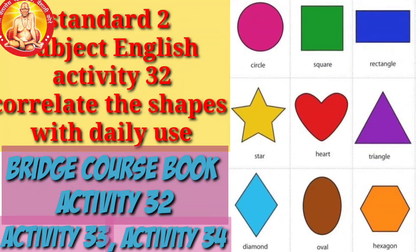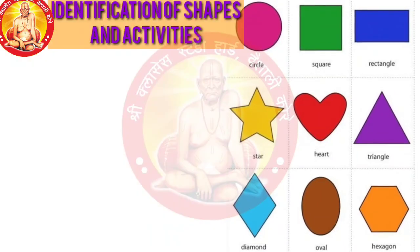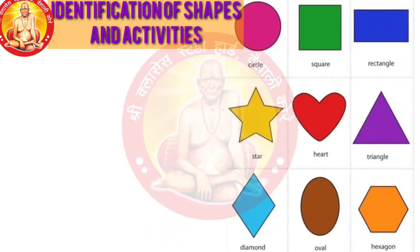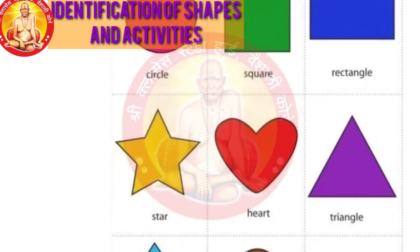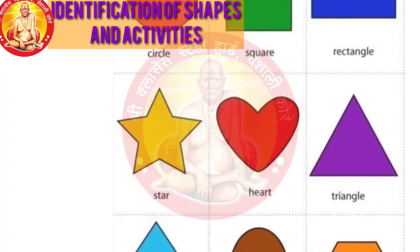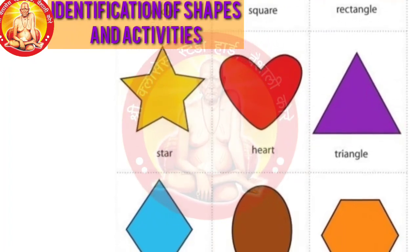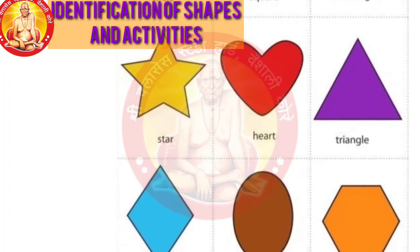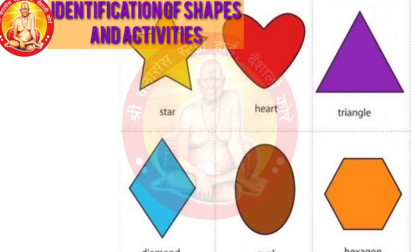Very Good Morning, Standard 2, Subject English. Activity 32, Activity 33, and Activity 34 are included: Identification of shapes — Circle, Square, Rectangle, Star, Heart, Triangle, Rhombus, Oval, and Hexagon. These are the shapes which we have shown to you. Now we will take each and every shape in detail.